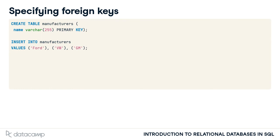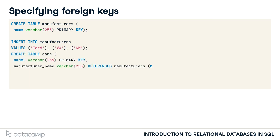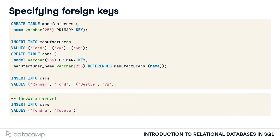When you create a new table, you can specify a foreign key similarly to a primary key. Let's look at two example tables. First, we create a manufacturers table with a primary key called name. Then we create a table cars that also has a primary key called model. As each car is produced by a certain manufacturer, it makes sense to also add a foreign key to this table. We do that by writing the REFERENCES keyword, followed by the reference table and its primary key in brackets. From now on, only cars with valid and existing manufacturers may be entered into that table. Trying to enter models with manufacturers that are not yet stored in the manufacturers table won't be possible, thanks to the foreign key constraint.